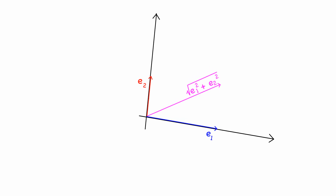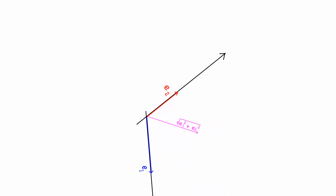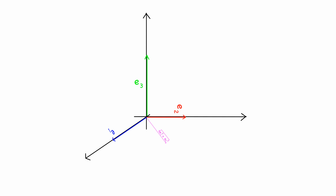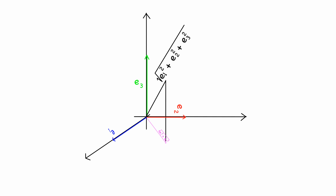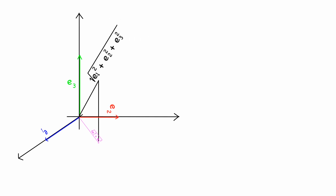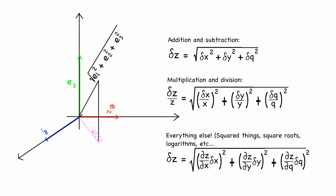What if you're combining three or more measurements? One can construct a right triangle in three dimensions using the three different sources of uncertainty. The hypotenuse is the square root of all three uncertainties squared. In other words, just extend the rules that you already know — adding three things in quadrature rather than just two.